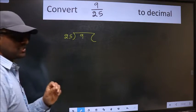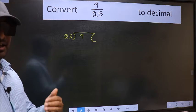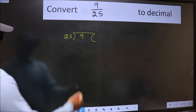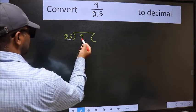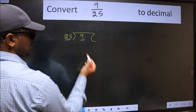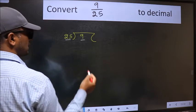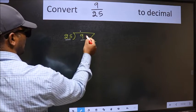This is your step 1. Next, here we have 9 and here 25. 9 is smaller than 25, so what we should do is put dot and take 0.